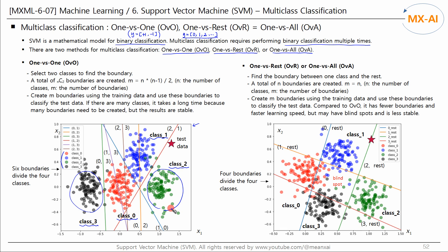If the number of classes is N, then the total number of boundaries will be M. M can be calculated by NC2 or this formula. In this example, N is 4, so M is 4C2, which is 6. The class of the test data can be predicted by majority vote using all M boundaries. We'll see more about this on the next page.